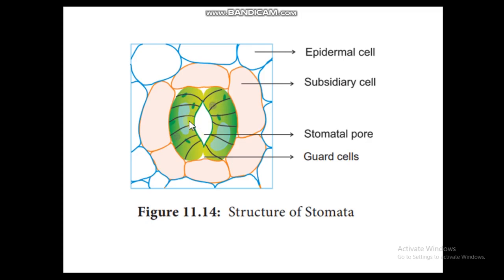The function of guard cells is to help in opening and closing the stomata. The stomata also lose water from the plant's body. If the stomatal pore remained open all the time, all the water in the plant's body could be lost — so the stomata must close to conserve water for the plant.